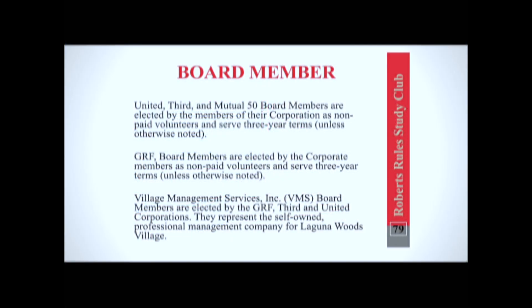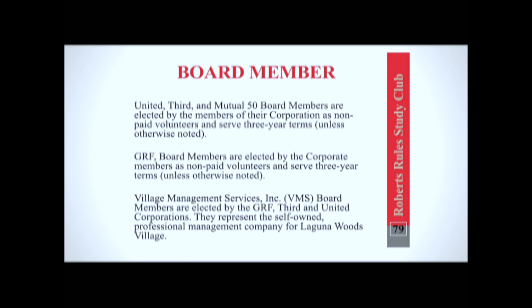Moving on to board members — the board is usually the highest governing authority of an organization. Here in the village we have several boards: United, Third, and Mutual 50, which are all boards for the housing units. Beyond those, there's the GRF board, elected by members of those first three boards, and GRF is in charge of all the facilities and amenities.